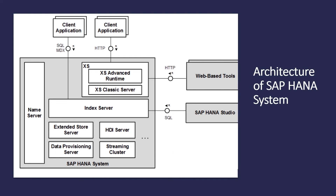The XS Classic server is also part of the SAP HANA Extended Application Service. It is the application server for native SAP HANA-based web applications. It is installed with the SAP HANA system and allows developers to write and run SAP HANA-based applications without needing an additional application server. SAP HANA XS is also used to run web-based tools for administration, lifecycle management, and development. The XS Classic server can run as a separate server process or embedded with the index server.